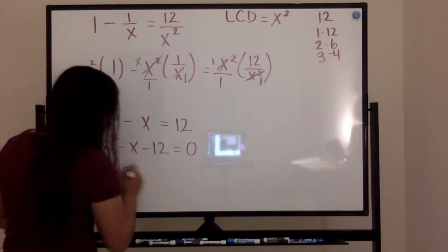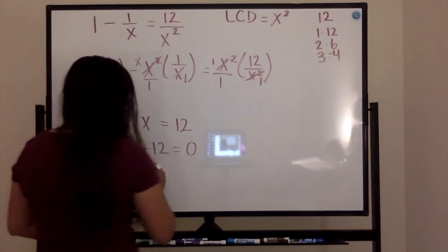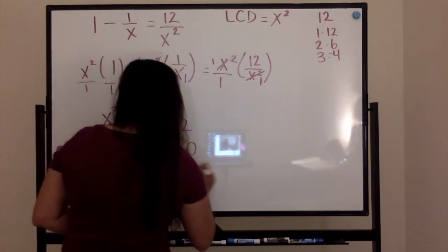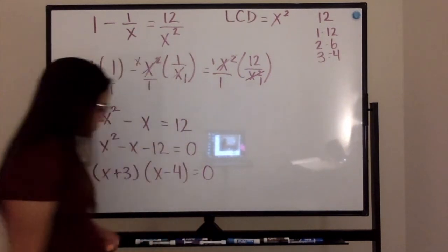the answer would be x plus three and x minus four is equal to zero.